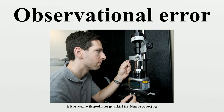Systematic error is predictable and typically constant or proportional to the true value. If the cause of the systematic error can be identified, then it usually can be eliminated. Systematic errors are caused by imperfect calibration of measurement instruments or imperfect methods of observation, or interference of the environment with the measurement process, and always affect the results of an experiment in a predictable direction. Incorrect zeroing of an instrument leading to a zero error is an example of systematic error in instrumentation.